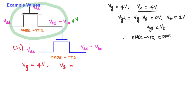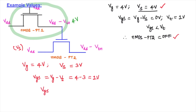Reducing VS further to 3 volts: VGS = VG minus VS = 4 minus 3 = 1 volt. The condition for the N-MOS pass transistor to turn on is VGS greater than or equal to Vt. Since VGS = 1 volt = Vt = 1 volt, the condition is satisfied — the second N-MOS pass transistor turns on at VS = 3 volts.